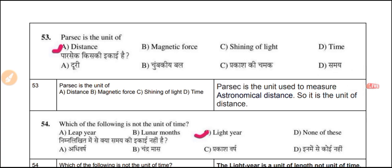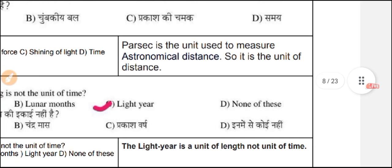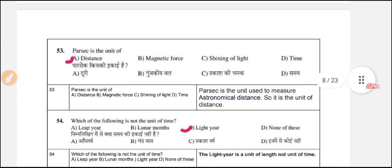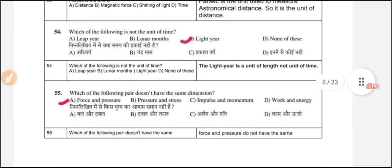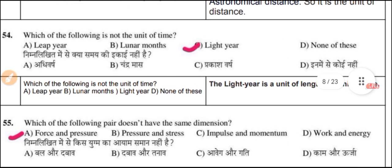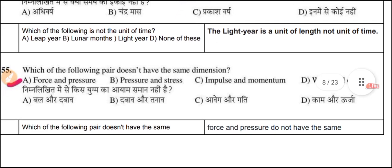Question 53: A parsec is a unit of astronomical distance — it is a unit of length. Question 54: Which of the following is not a unit of time? The options include light year, leap year, and lunar month. A light year is a unit of length, not time.